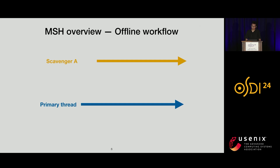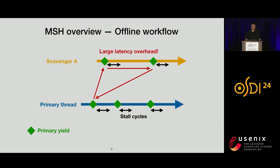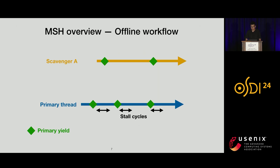MSH has both offline and online parts. In the offline part, we are given the binaries of the primary and scavengers. We first profile them to identify locations with potential memory stalls, and then MSH instruments at these locations what we call primary yields. The purpose of this yield is to prefetch the later-requested cache line and then yield to a different coroutine to harvest the stall cycles. However, with only primary yields, you get large latency overhead because the gaps between yields can be arbitrarily large, resulting in a slowdown of the primary.